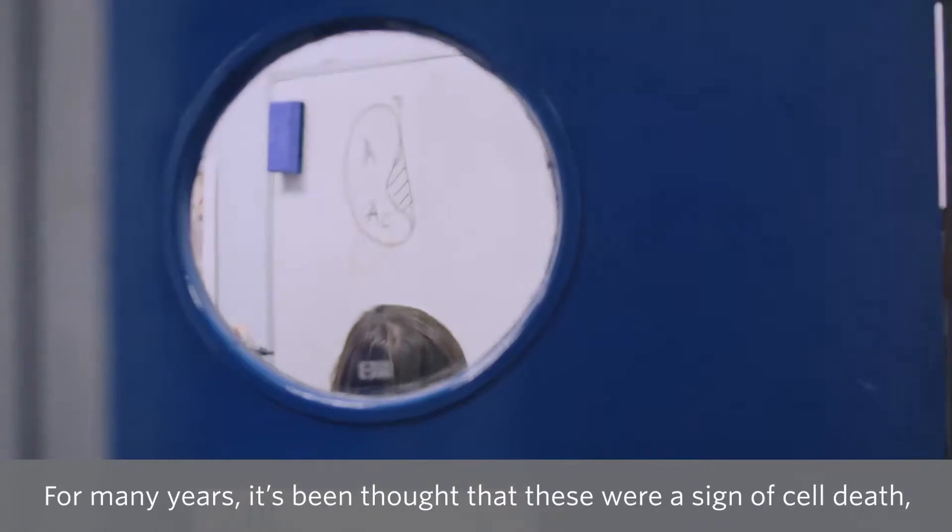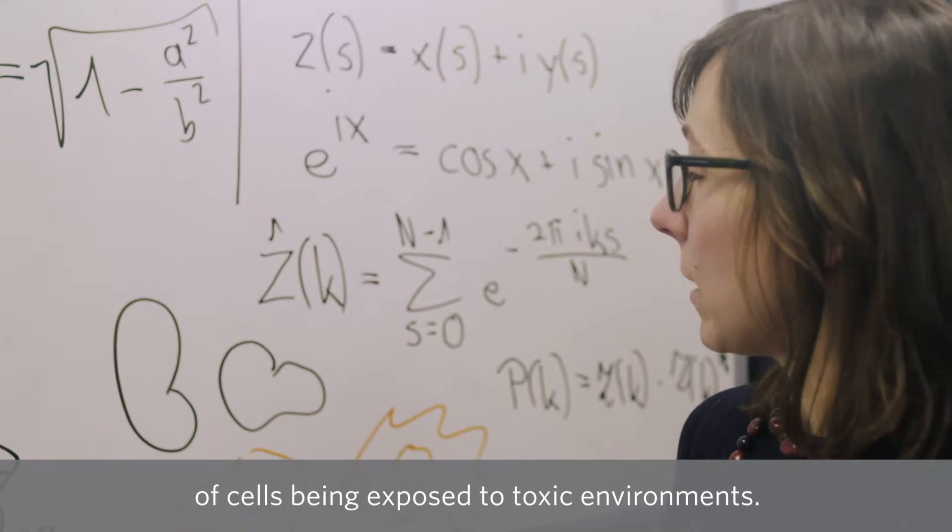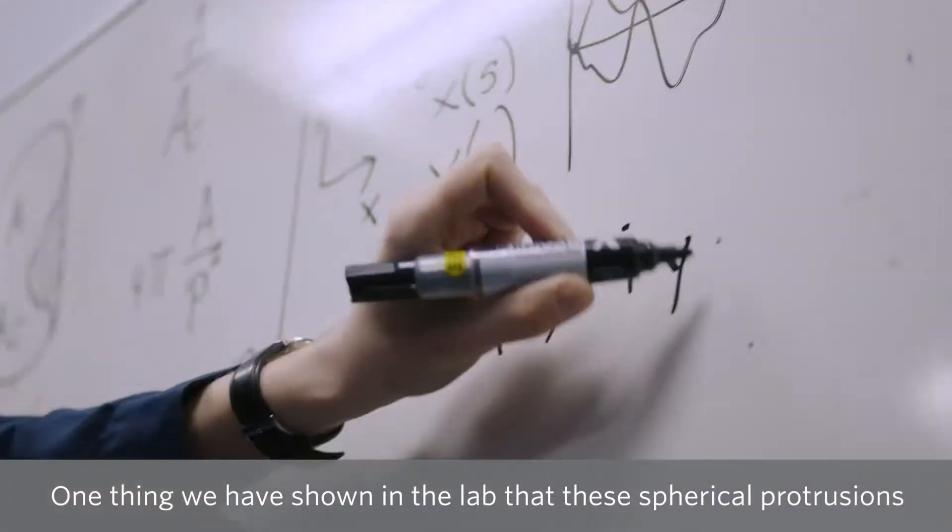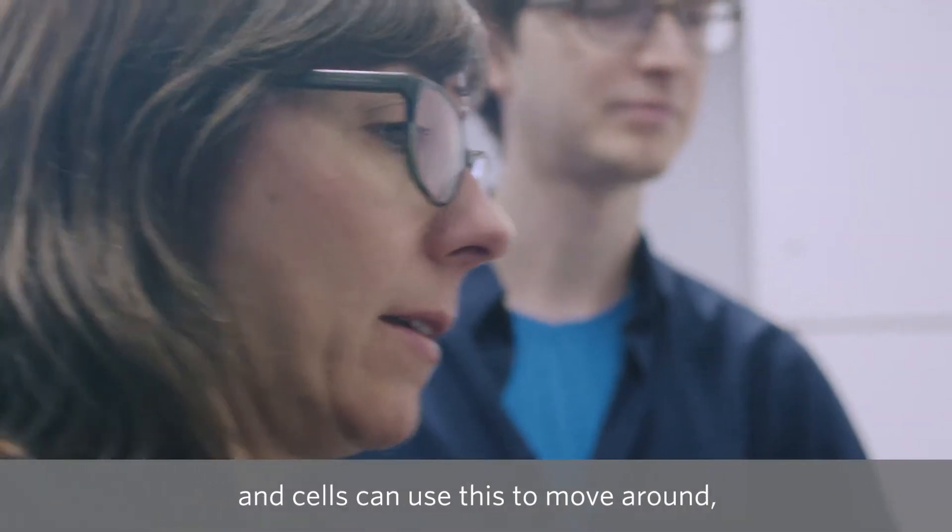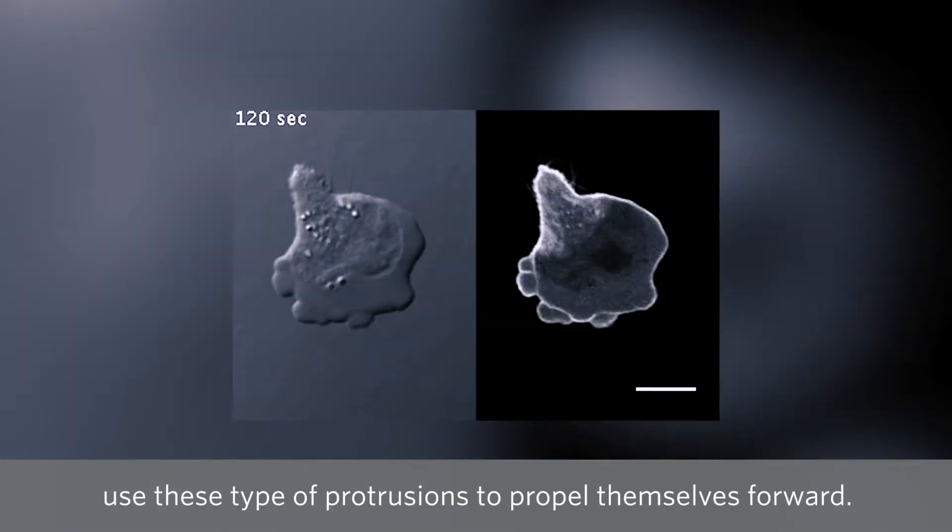For many years it's been thought that these were a sign of cell death, of cells being exposed to toxic environments. One thing we have shown in the lab is that these spherical protrusions are actually quite often completely healthy, and cells can use this to move around. Many cells migrating use this type of protrusions to propel themselves forward.